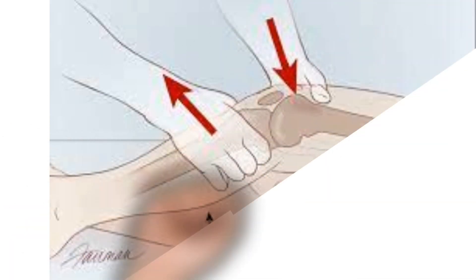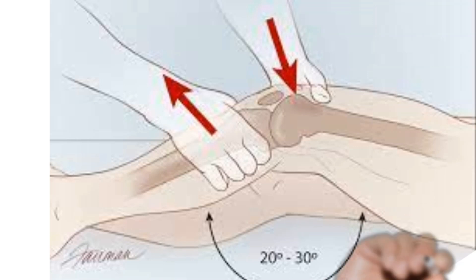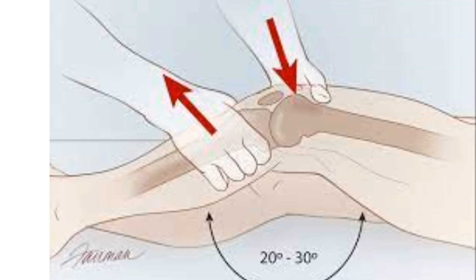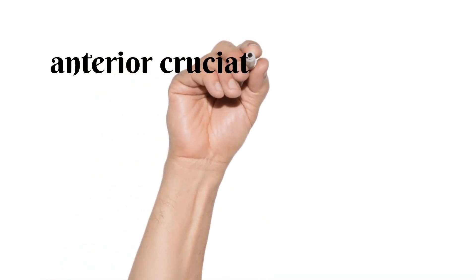This is one reason why we do the Lachman test for the anteromedial bundle of the ACL, while we do the pivot shift test to check the posterolateral component of the ACL. The ACL is basically a primary restraint to anterior translation of the tibia but secondarily limits tibial rotation relative to the femur and also varus and valgus angulation.